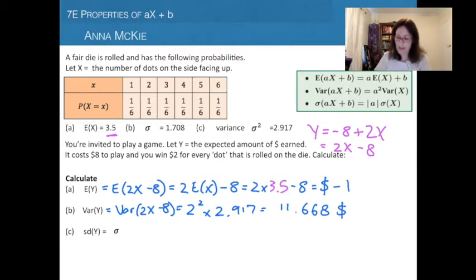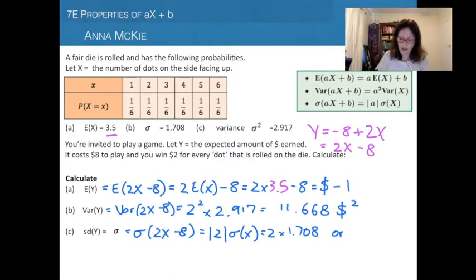The units for this are dollars squared, because variance is standard deviation squared. That's not very useful, so that's why we calculate the standard deviation as the square root of that. The standard deviation is equal to |a| × σ(X), and our a is 2, multiplied by 1.708. Or you could take the variance and square root that. The answer is 3.42 dollars. That's the standard deviation, how much things deviate from the mean in this scenario.